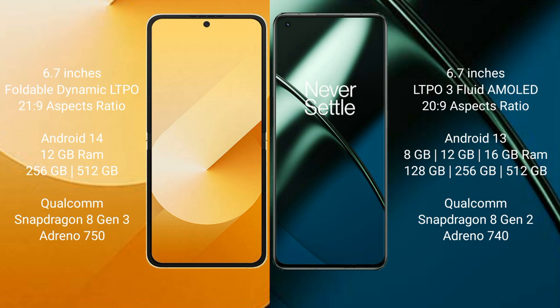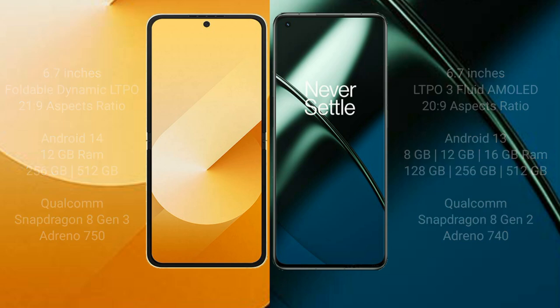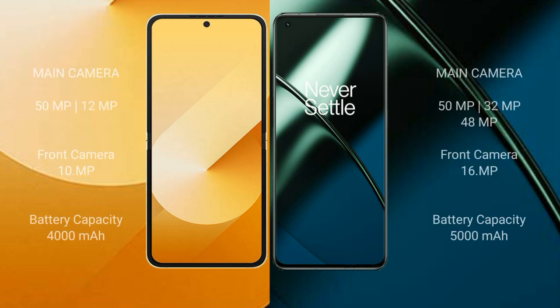The OnePlus 11 comes with 8GB, 12GB, or 16GB of RAM and 128GB, 256GB, or 512GB of internal storage, powered by the Qualcomm Snapdragon 8 Gen 2 processor with GPU Adreno 740.